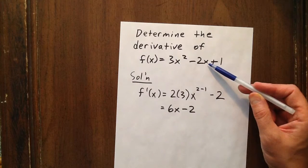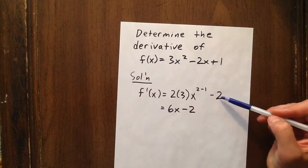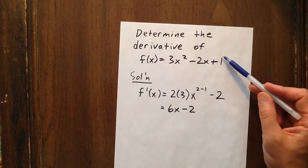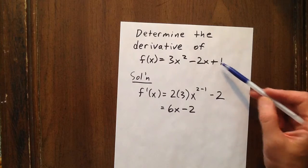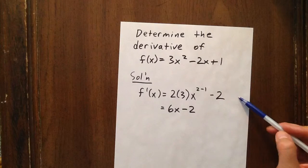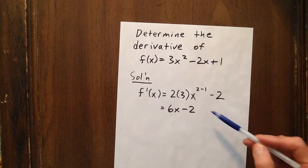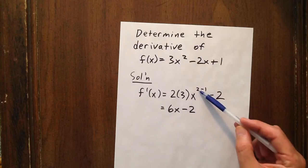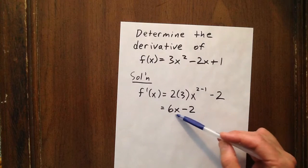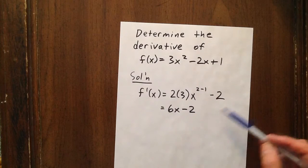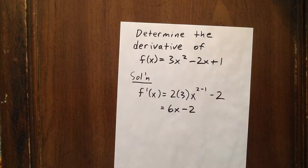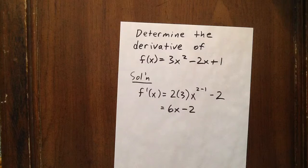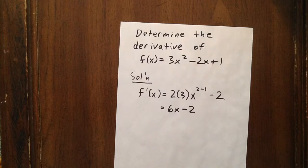The derivative of negative 2x is negative 2, and the derivative of 1 is 0. So what we're ultimately left with is 6x to the exponent of 1 minus 2. The derivative of the original expression is 6x minus 2.